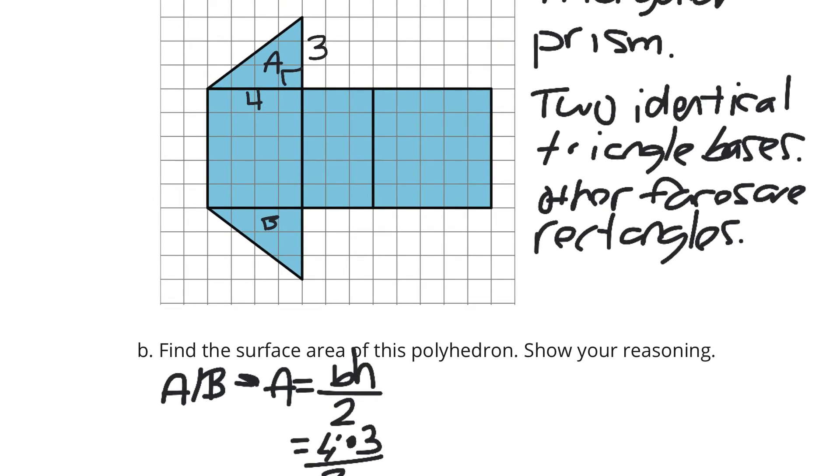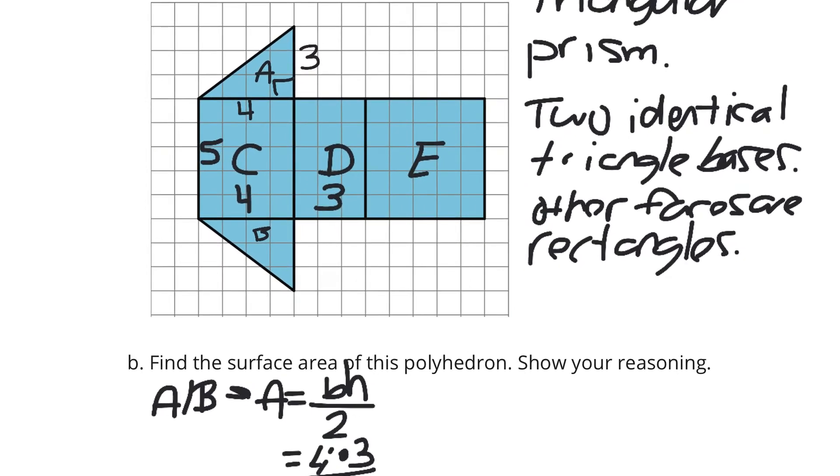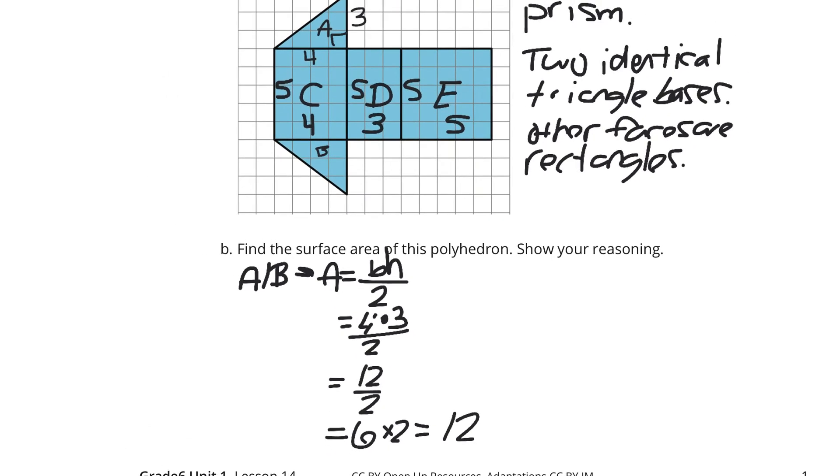And now, we can look at our rectangles. Let's call them C, D, and E. Rectangle C is 4 by 5. Rectangle D is 3 by 5. Rectangle E is 5 by 5.